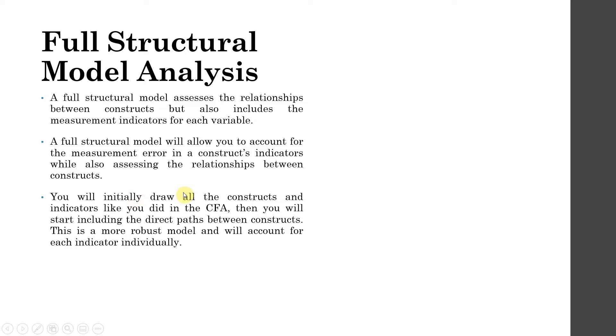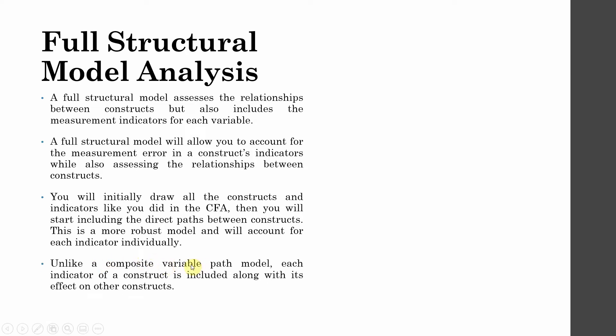You will initially draw all the constructs and indicators similarly as you did in your CFA, then start including the direct paths between the constructs. The process is similar to CFA — we add the constructs with their indicators. But in CFA we drew covariances between constructs; here we will add direct paths, single-headed arrows. This is a more robust model and will account for each indicator individually. Unlike a composite variable used in path analysis, each indicator of a construct is included along with its effect on other constructs.